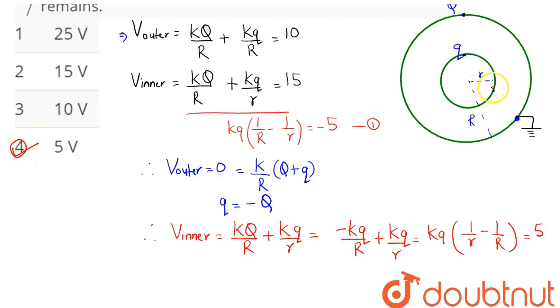When the outer shell is grounded, the potential on the inner shell becomes 5 volts. Hence option number 4 is the correct answer.